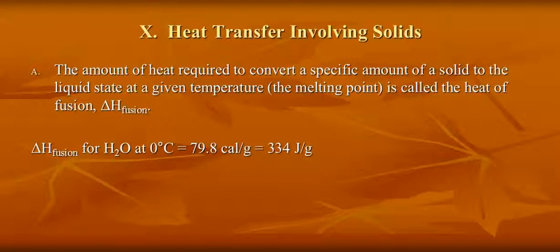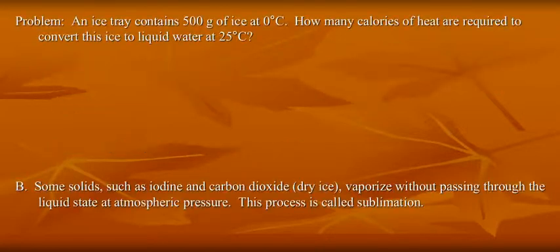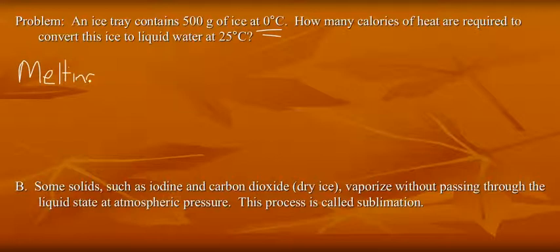And for water, this is 79.8 calories per gram. So let's look at a problem where we're converting ice to liquid water at 25 degrees Celsius. We're already at the freezing point. So we need to change state. So we need to melt the ice first. Change state is Q equals M delta H. In this case, it's delta H of fusion.